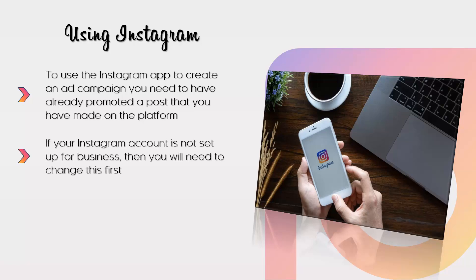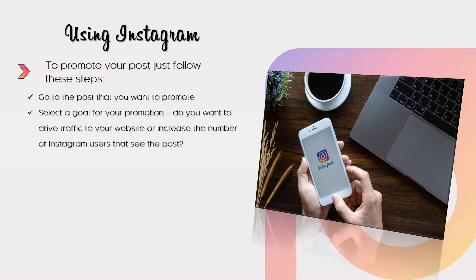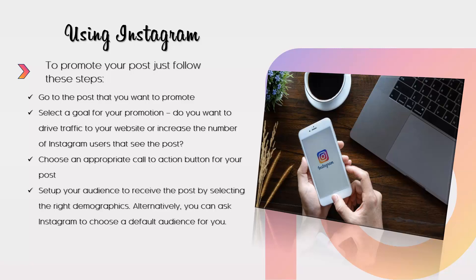If your Instagram account is not set up for business, you will need to change this first. To promote your post, follow these steps: go to the post you want to promote, select a goal for your promotion — do you want to drive traffic to your website or increase the number of Instagram users that see the post? Choose an appropriate call-to-action button, set up your audience by selecting the right demographics, or ask Instagram to choose a default audience for you. Enter your budget and duration, then create the promotion. Using Facebook Ads Manager, you can track the results of your promotion and all other Instagram ads.